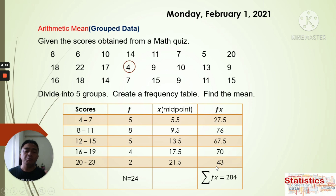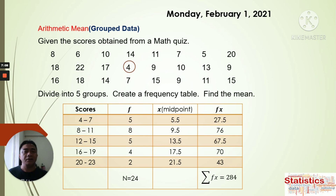The last column is f times x. We multiply frequency by midpoint: 5 × 5.5 = 27.5, 8 × 9.5 = 76, 5 × 13.5 = 67.5, 4 × 17.5 = 70, and 2 × 21.5 = 43. Now we have completed all the data needed in the frequency table to find the arithmetic mean.